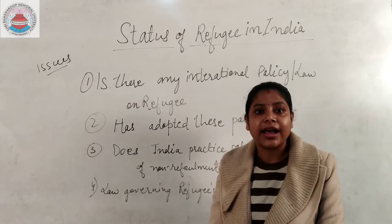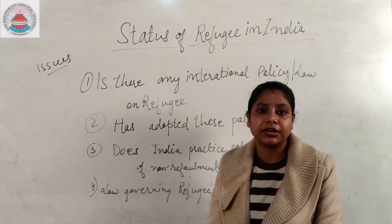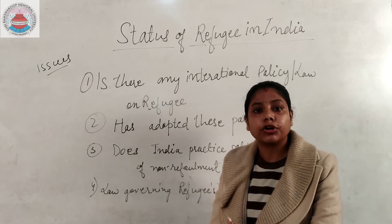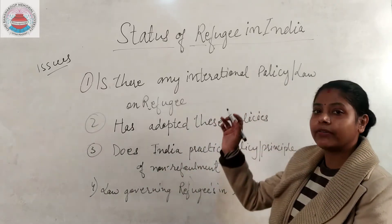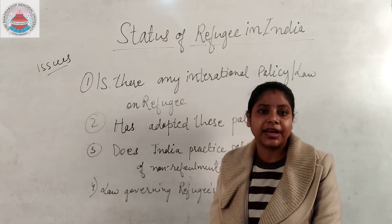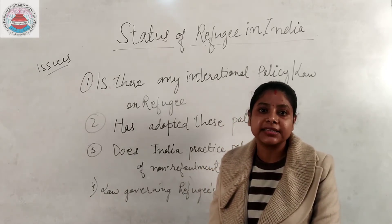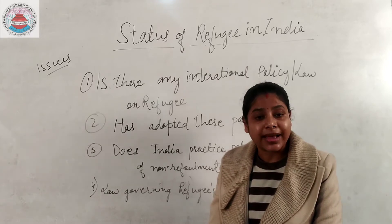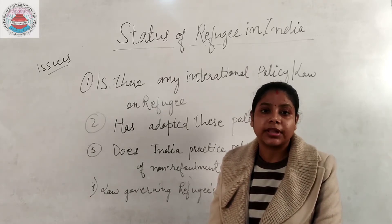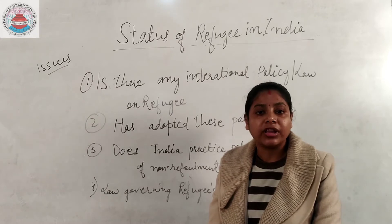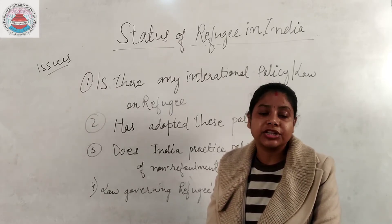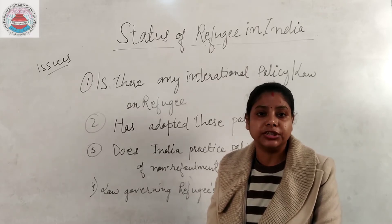Now, what was the need — why were these covenants entered into? The reason for the emergence of these two conventions — the UN Convention on the Status of Refugees 1951 and its Protocol of 1967 — was World War II. The European countries, after the crisis of World War II, adopted these conventions for the protection of refugees.